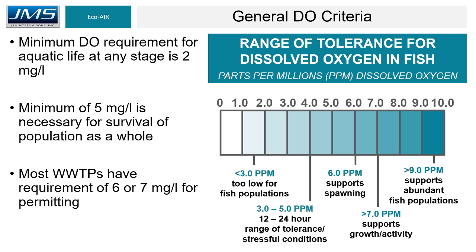General DO criteria: the minimum DO requirement for aquatic life at any stage of life is 2 milligrams per liter. A minimum of 5 milligrams per liter is necessary for survival of the population as a whole, and most wastewater treatment plants have a requirement of 6 or 7 milligrams per liter for permitting. Fish begin leaving areas at 2 to 3 parts per million. Notably, carp only require 1 milligram per liter. Some permits call for DO effluent requirements as high as 7 to 8 milligrams per liter, typically due to the effluent falling into a trout stream.